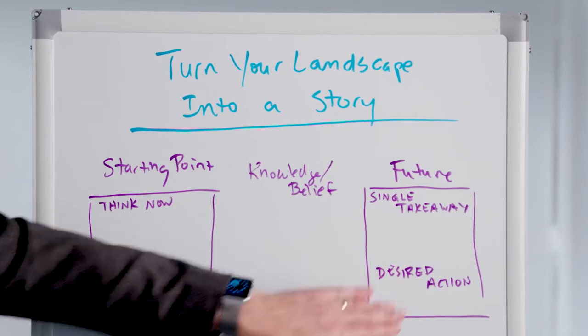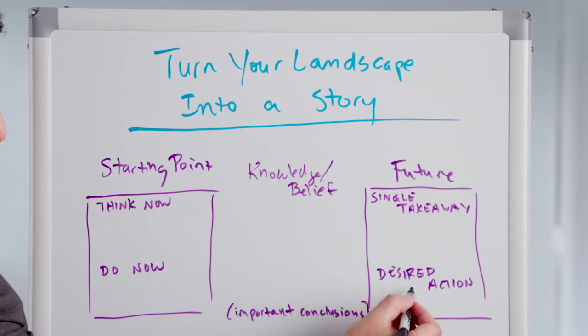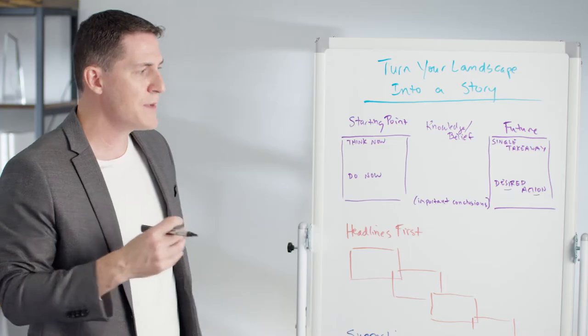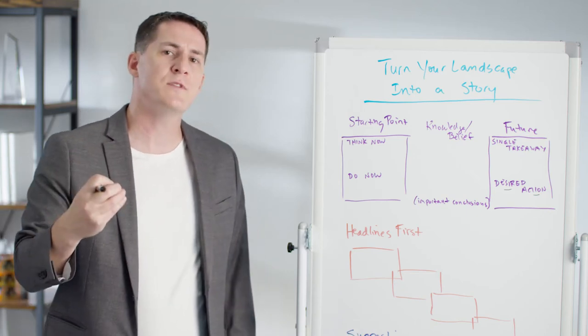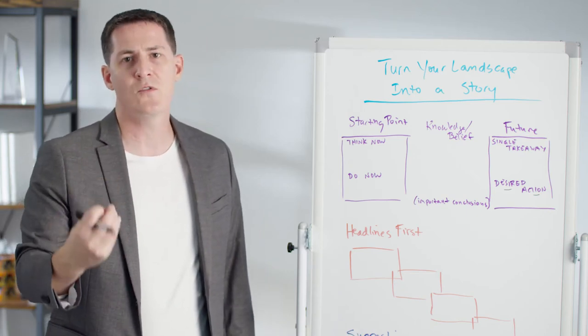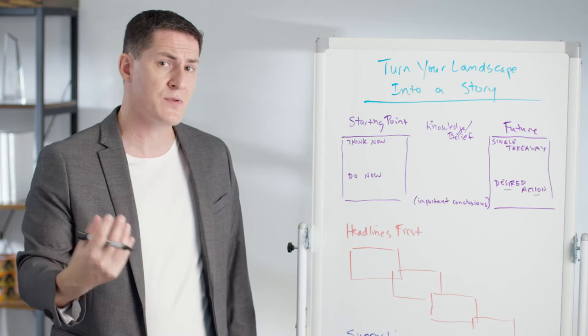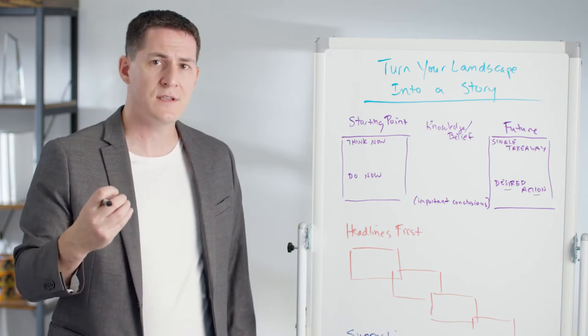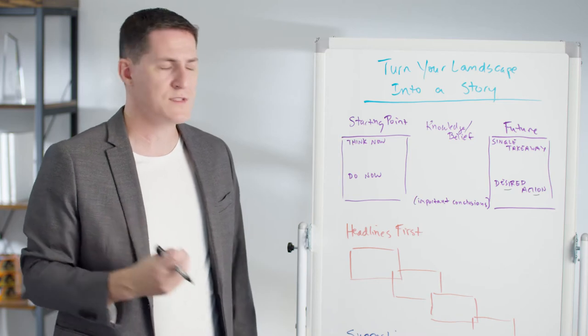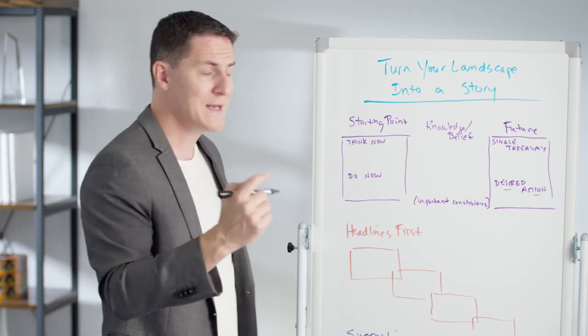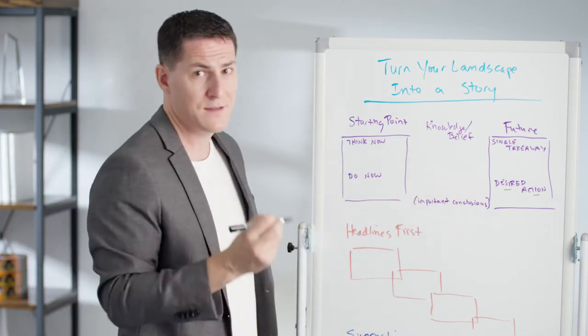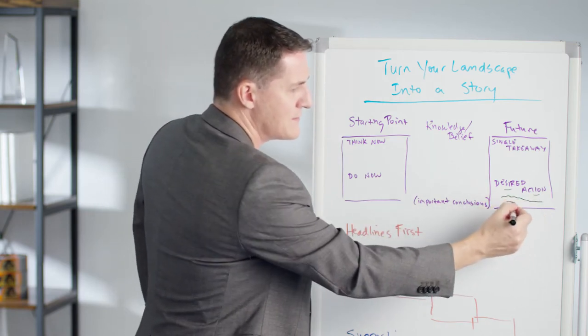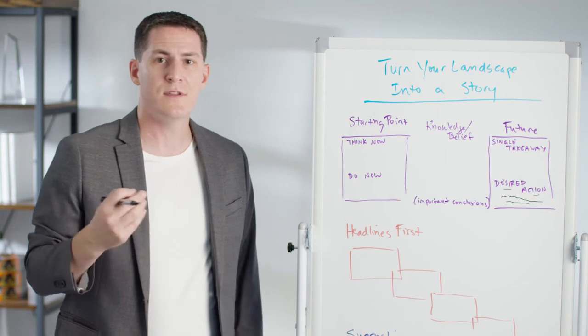I want you to look first at desired action, which is all the way over here at the very end, because I want us to start with the end in mind. Think about the desired action you want someone to take as a result of having seen or read your landscape analysis or the presentation that you're going to give. What is it that you want them to do next once they leave that room or once they've read it? You're going to write that into the box. So we're actually going to write the ending box first. Write in here, write in the desired action that you want the audience to take.